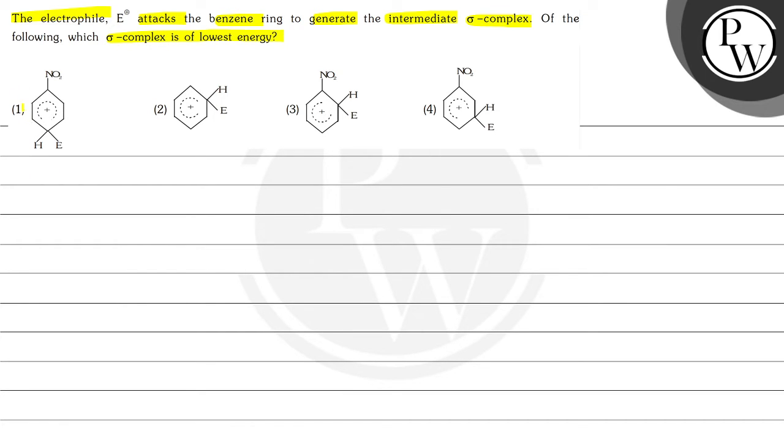Here the four complexes are given. In this, this is a nitro benzene in which electrophile is attached on para position with respect to nitro. Here in this, only benzene ring with this electrophile. Here in this nitro benzene, electrophile is attached on ortho position with respect to this nitro group. And in this, this electrophile is attached to the meta position with respect to this nitro group.